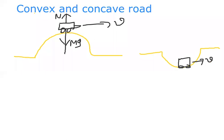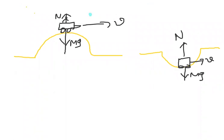Whether on a convex road or concave road, the normal reaction N acts normal to the body and weight mg always acts downward — these two things are fixed. Apart from these two, we have one more force: centripetal force, which acts inward. The outward counterpart, centrifugal force, acts radially outward with magnitude mv²/r, where r is the radius of the curved part.